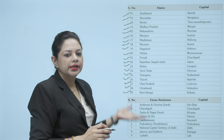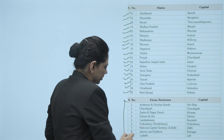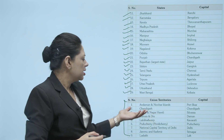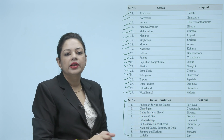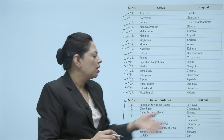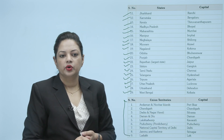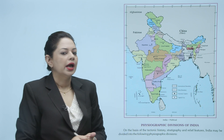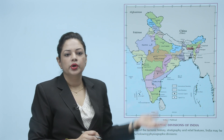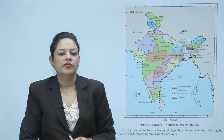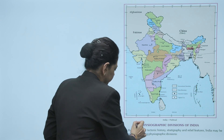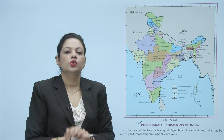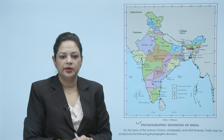Yeh hain hamari union territories aur unki capitals. For example, Andaman aur Nicobar, Chandigarh, Dadra aur Nagar Haveli — yeh hamari union territories hain aur yeh inki capitals hain. Ab hum baat karte hain physiographic division of India ki — India ko kitne states aur kitne union territories mein baata gaya hai yeh humne dekha, ab physiographic division mein hum relief features ke baare mein baat karenge.